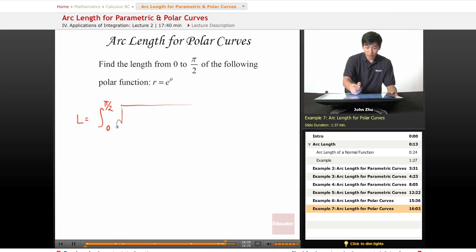square root of r squared, which is e to the 2 theta, plus dr d theta squared. Well, dr d theta, we know, is simply e to the theta.